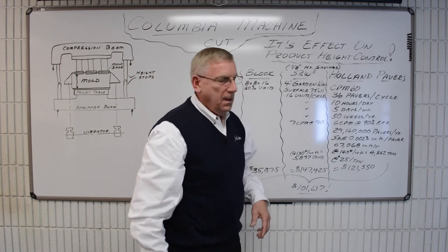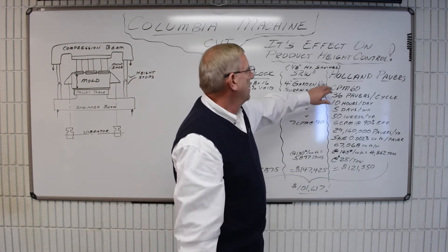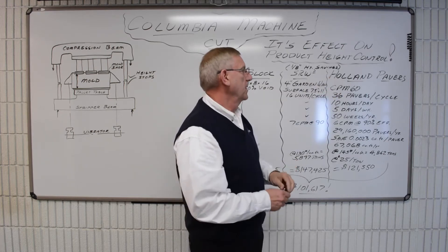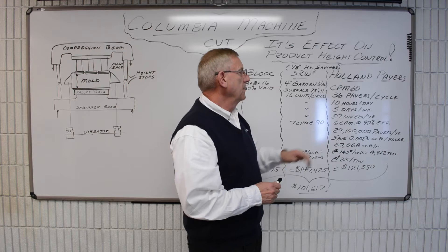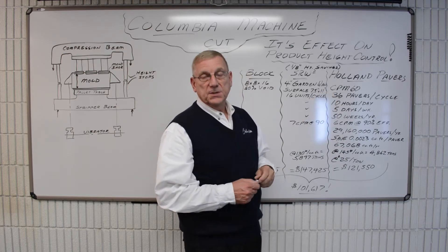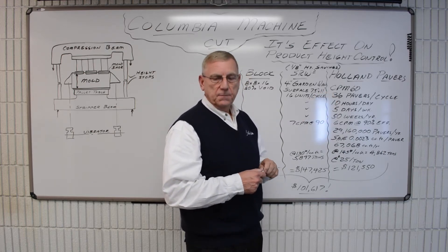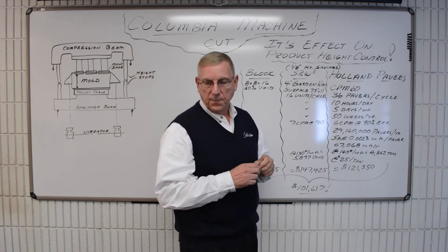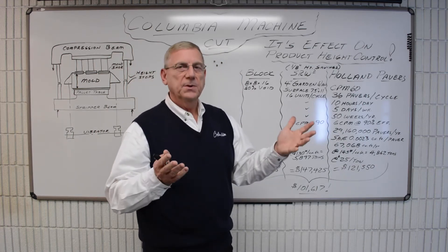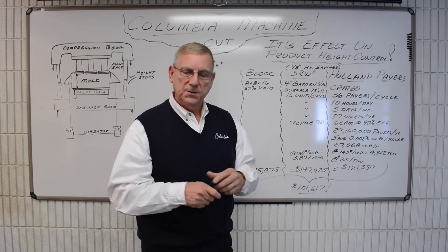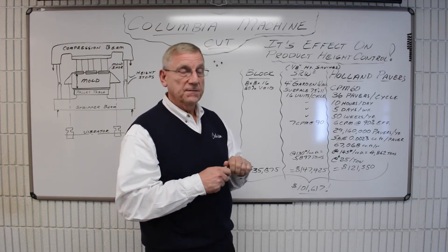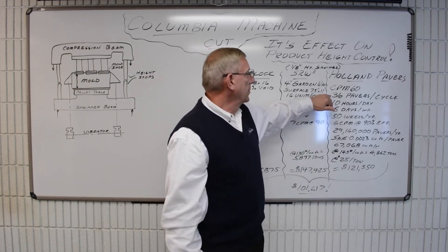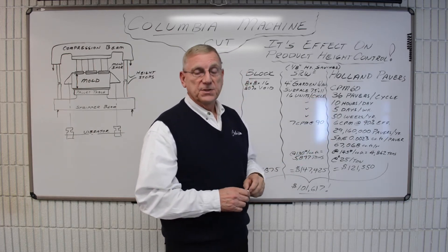If we consider making Holland pavers, just a regular Holland paver, and say we make these on a CPM 60 or a 6-at-a-time machine with a deep pallet, that deep pallet being 700 millimeter by 1400 millimeter or 27 and 9/16 by 55 inches. On that size pallet, we can produce 36 pavers per machine cycle.